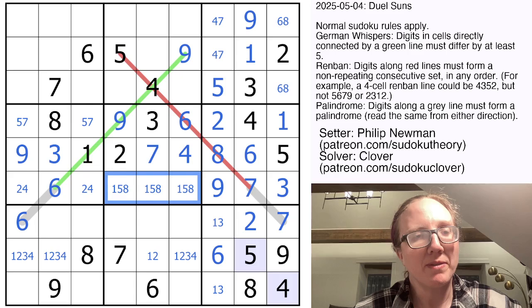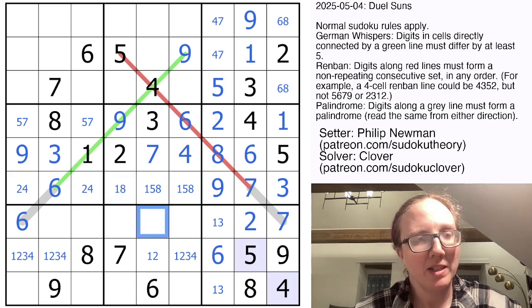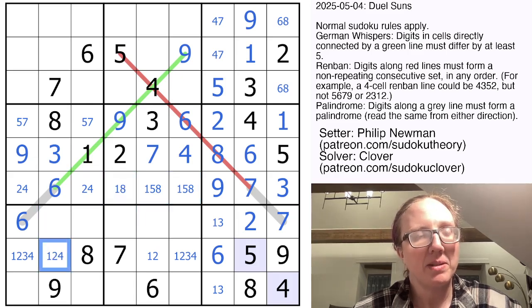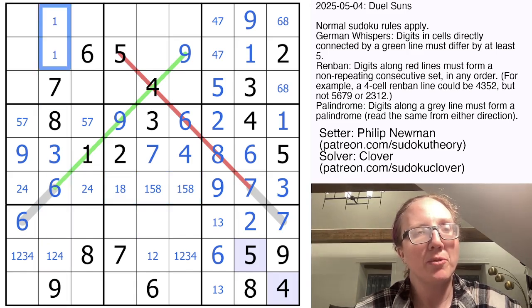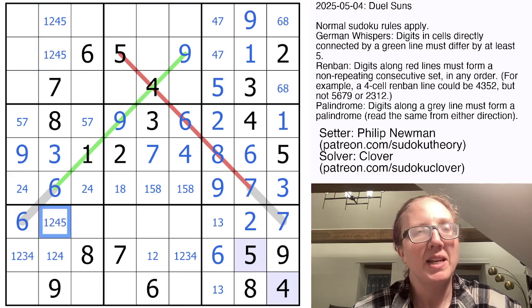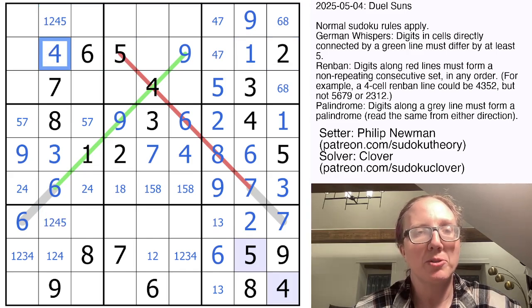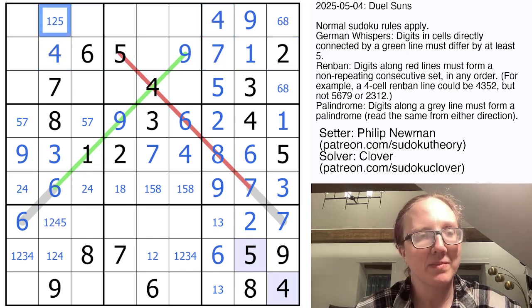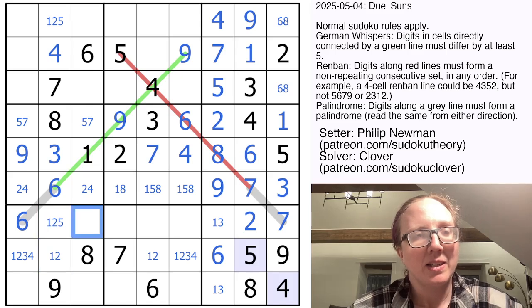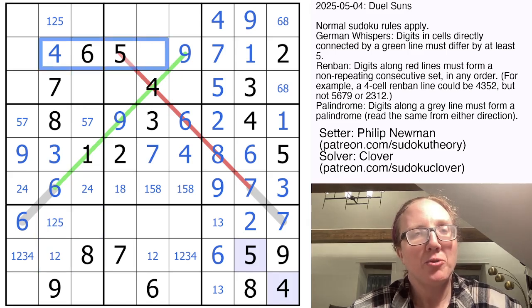And then these need to be one, five, and eight. This now can't be a three because there's a three right there. In fact, in this column, we need one, two, four, and five. And in this row, we already have one, two, and five. So this is a naked four, which makes this a seven.